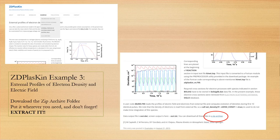To find the download for this example, go to the ZDPlaskin website — I have a link in the description. You will find the test under the name "External Profile of Electron Density in Electric Field." It's a long name, so I'm just calling it example 3. Go ahead and download that zip file and we'll take a look at what we're doing today.